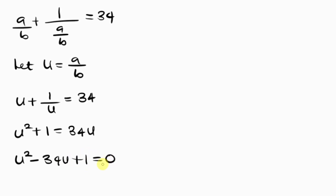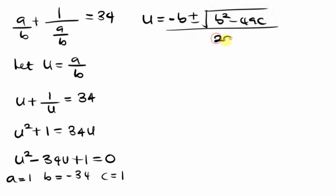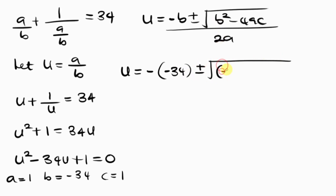I'll use the quadratic formula to solve this. Looking at the equation, a equals 1, b equals negative 34, and c equals 1. The quadratic formula gives u equals negative b plus or minus the square root of b squared minus 4ac, all divided by 2a. Substituting: u equals negative negative 34, plus or minus the square root of negative 34 squared minus 4 times 1 times 1, divided by 2 times 1.